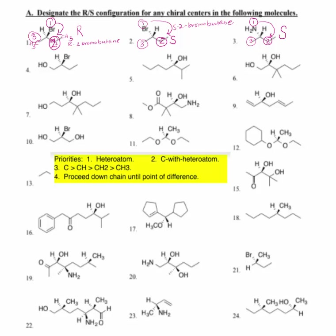For number four, our bromine is CIP priority number one. Now we have a carbon that has a heteroatom — that heteroatom is oxygen. So number two is over here on the left, and number three is over here on the right. We are rotating counterclockwise, so this is an S configuration.